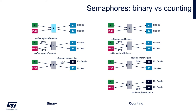Let's focus on the two most popular types: binary and counting semaphores. On the left side of the screen we can see an illustration of binary semaphores and their cooperation with other OS components. As an example, task A and interrupt IRQ1 can give the semaphore, while two tasks — task C and task D — are waiting for it, being in a blocked state.